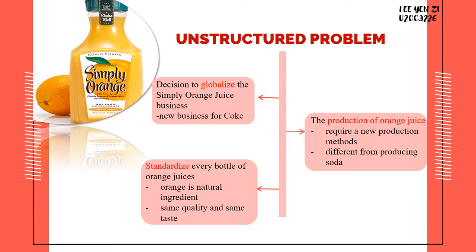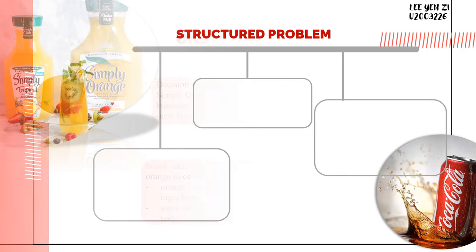Another unstructured problem is to standardize every bottle of orange juice in order to deliver an optimal orange juice to customers without using any synthetic flavors, additives, or preservatives. Coke wishes to deliver the great taste of orange juice to customers, but it is too difficult for Coke to ensure every bottle of orange juice has the same sweetness, acidity, and quality.